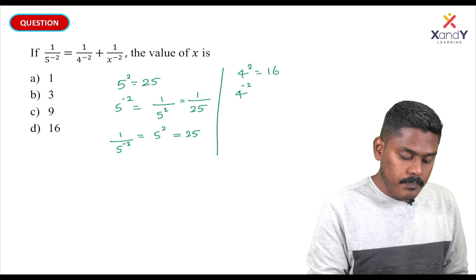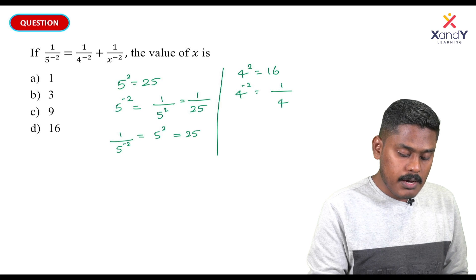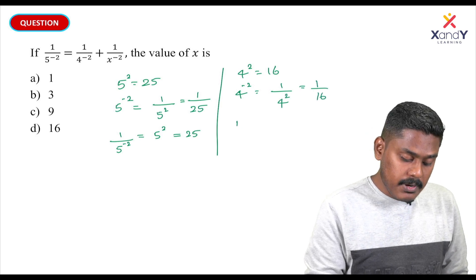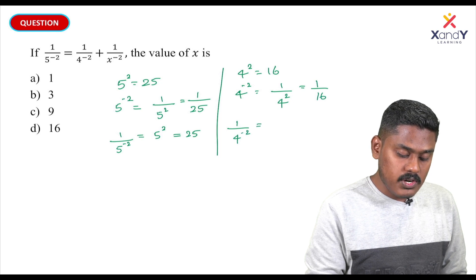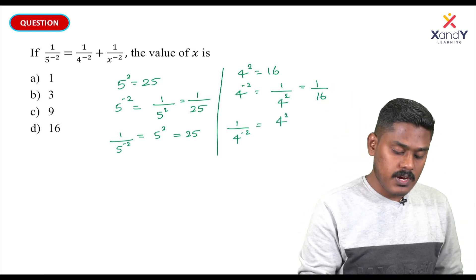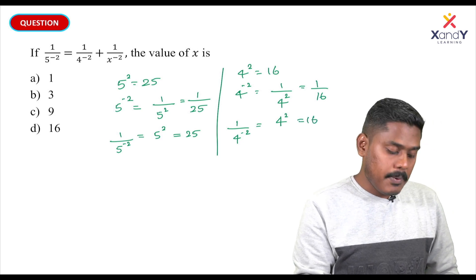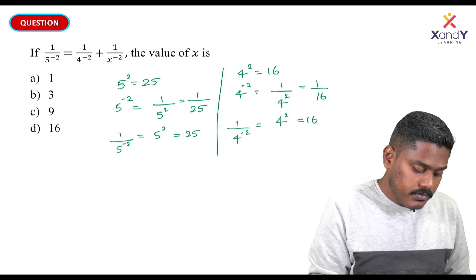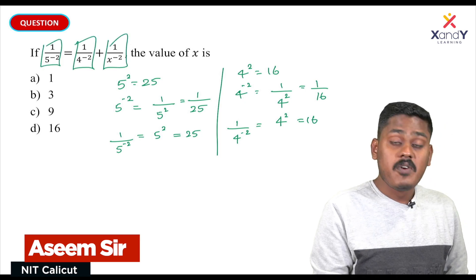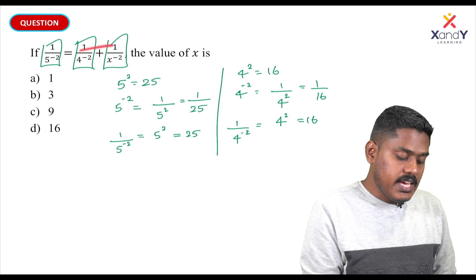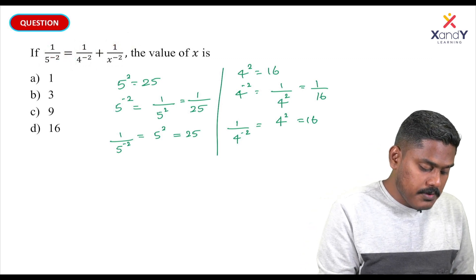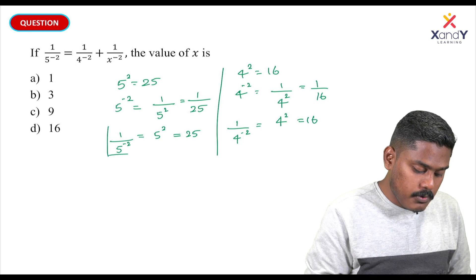1 by 4 raised to 2 becomes 1 by 16. And 1 by 4 raised to minus 2 becomes 4 raised to 2, which is 16 — turning the negative exponent to positive. Now, I am going to modify the original equation: 1 by 5 raised to minus 2 is equal to 1 by 4 raised to minus 2 plus 1 by x raised to minus 2.